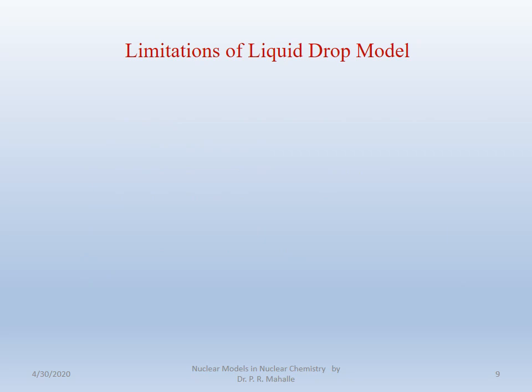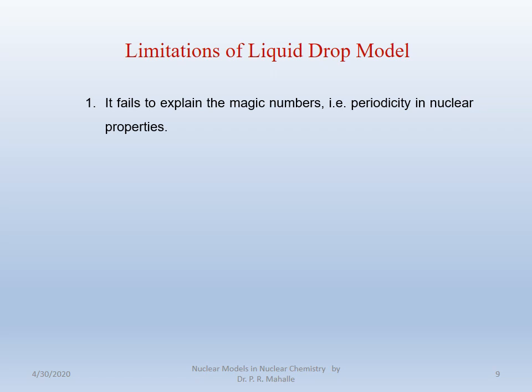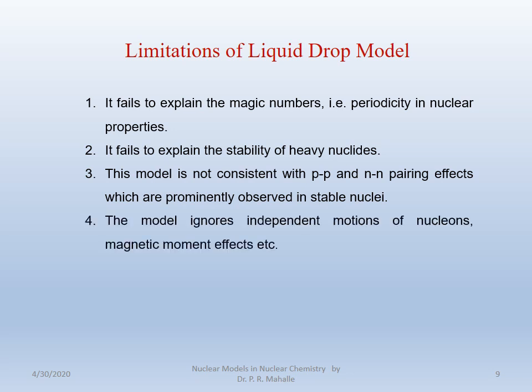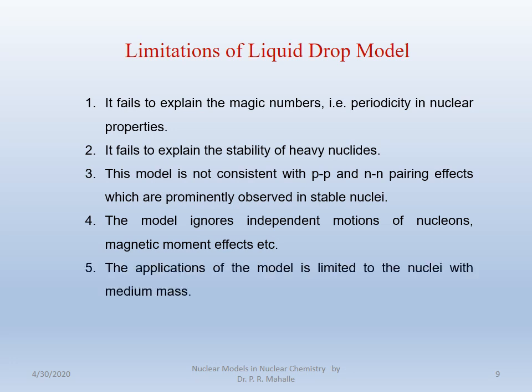We will see the limitations of the liquid drop model. Though there are certain advantages of the liquid drop model over the shell model, it has some limitations. This liquid drop model fails to explain the magic numbers, that is the periodicity in the nuclear properties. It fails to explain the stability of the heavy nuclei. This model is not consistent with proton-proton and neutron-neutron pairing effects, which are prominently observed in the stable nuclei. The model ignores the independent motion of nucleons, magnetic moment effects, etc. The application of the model is limited to nuclei of medium mass. Thus, this is all about our nuclear models.